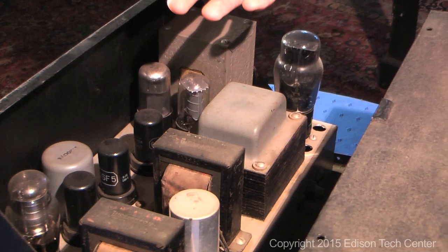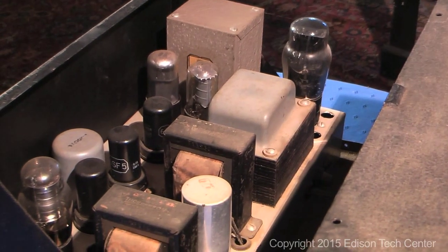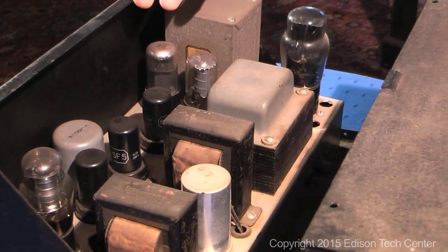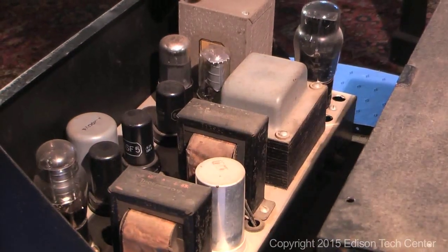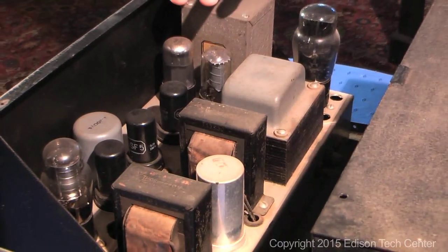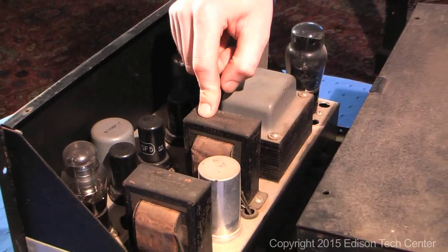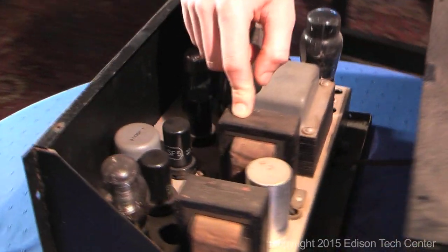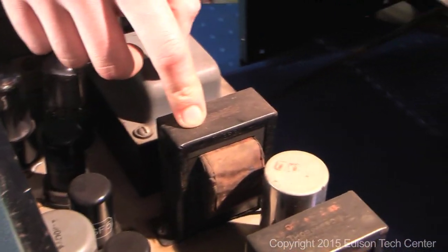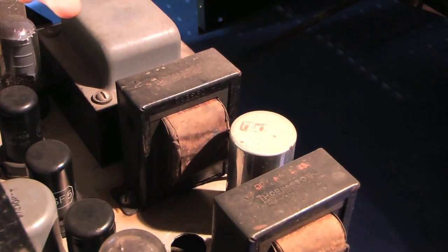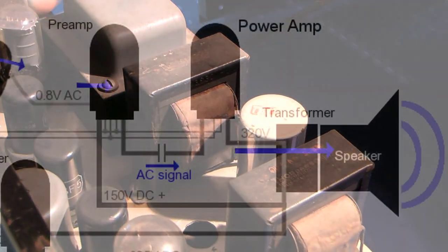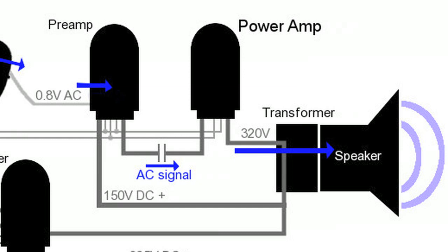Since the circuit operates at hundreds of volts of potential, we can't directly hook that up to a speaker which only requires a few tens of volts. So these transformers here are used to take the signal from the high voltage, high impedance tube circuitry and step it down to a more reasonable voltage.